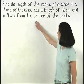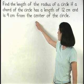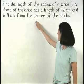Find the length of the radius of a circle if a chord of the circle has a length of 12 centimeters and is 4 centimeters from the center of the circle.